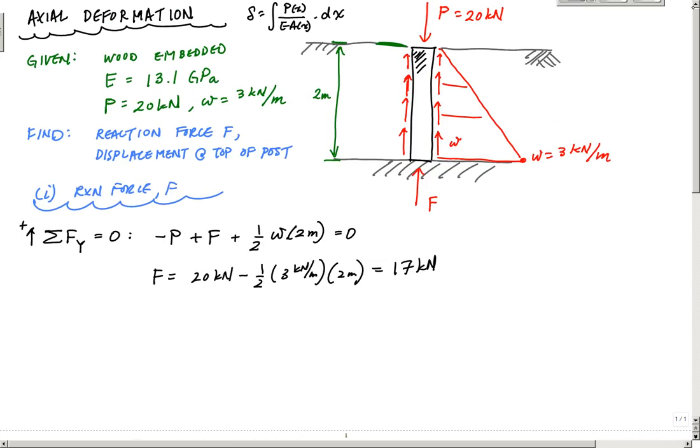The next part is to determine the displacement of the post. To get the displacement, we need to use the axial deformation relationship we derived earlier. We need to know what the internal axial force is. This P(x) is the internal axial force, and it's changing along the length. We want the internal axial force as a function of position, similar to a shear and moment diagram with a triangular load.